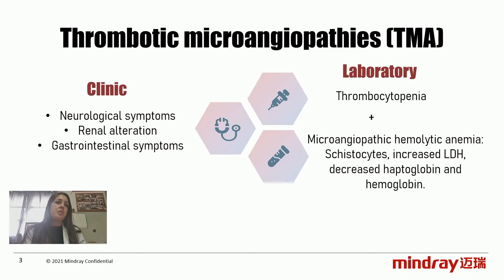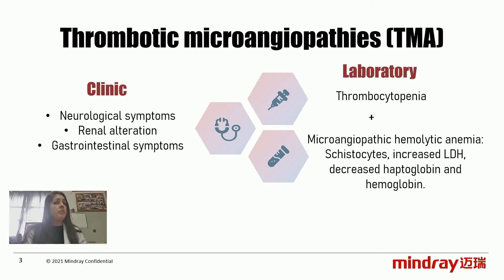Immune Mediated Thrombotic Thrombocytopenic Purpura, iTTP, is one of the thrombotic microangiopathies which comprise entities with very diverse characteristics. They should be suspected when a patient presents one or more of the following manifestations: neurological symptoms such as confusion or seizures, impaired renal function characterized by increased creatinine, decreased glomerular filtration rate, hypertension, and pathological urinary sediment, or gastrointestinal symptoms with diarrhea with or without blood.